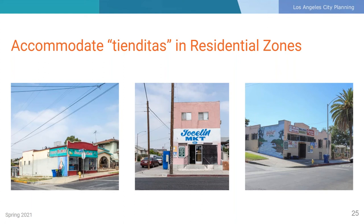These uses are subject to the following limitations: a maximum of 1,500 square feet in size, which reflects the existing scale of current tienditas; limited hours of operation, recognizing that these will be located adjacent to existing residential uses; and they can only be located on a corner property, to prevent entire blocks in the residential areas from changing from residential uses to commercial uses. The plan also includes policies and programs that encourage these corner stores to provide fresh produce and groceries to the community, with future programs and partnerships identified to help incentivize sales of fresh produce in these stores.